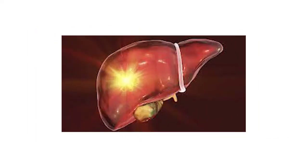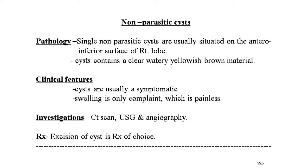Now, regarding non-parasitic cysts: single non-parasitic cysts are easily situated on the anterior inferior surface of the right lobe. The cyst contains a clear, watery, yellowish-brown material. Clinically, these cysts are usually asymptomatic, and swelling is the only complaint, which is painless.